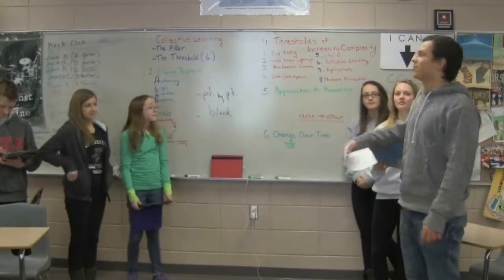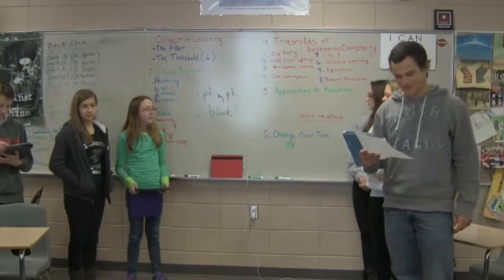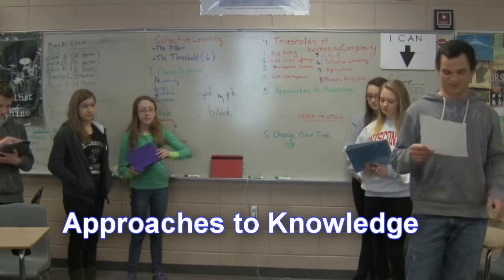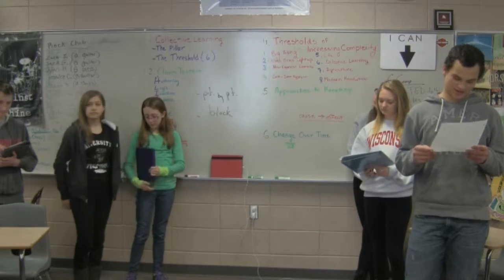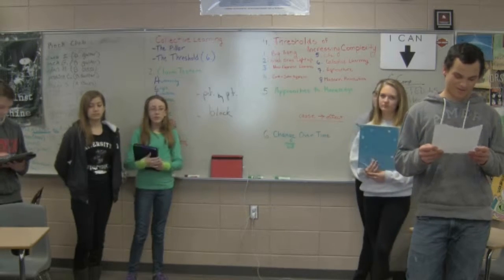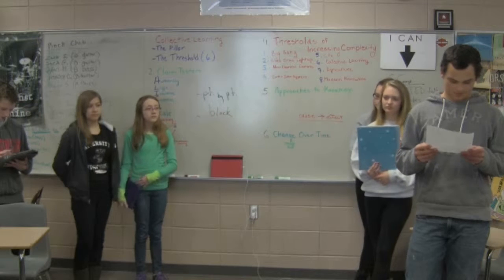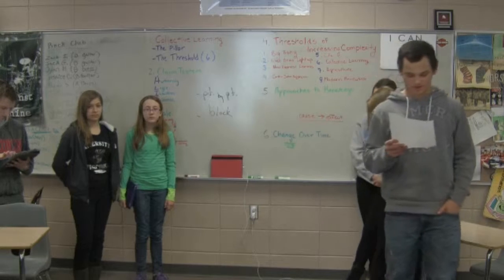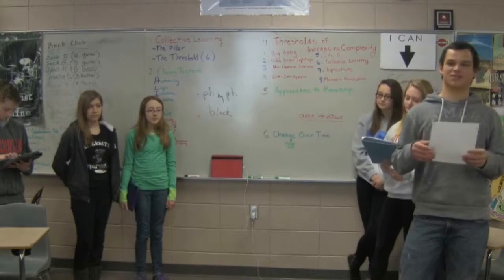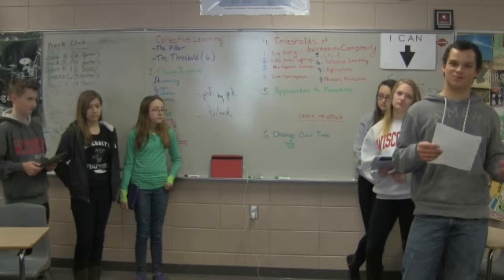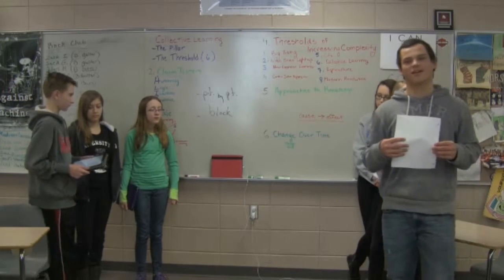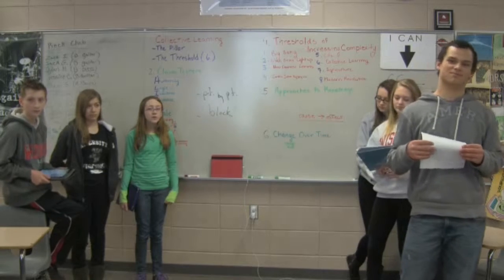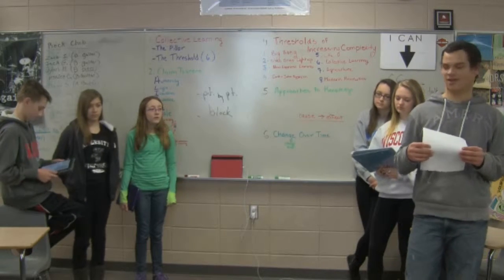We had approaches to knowledge. What approaches to knowledge means is taking the perspective of different types of people so you can understand the topic better. For example, from a reading, historians describe something a certain way — that's taking it from a historian's perspective. But you could also take it from the perspective of a regular person, and the information might be different to you than to some expert on the topic.